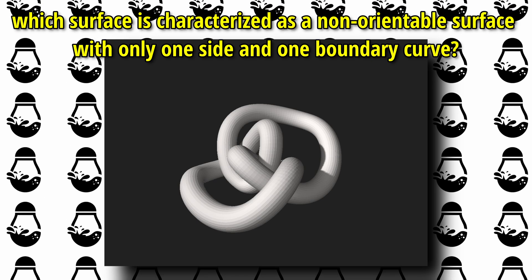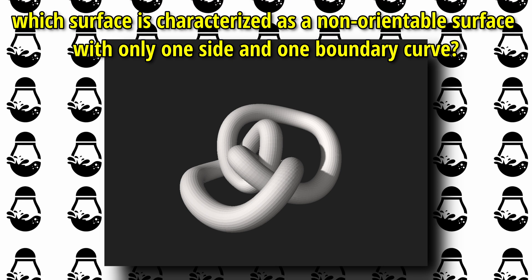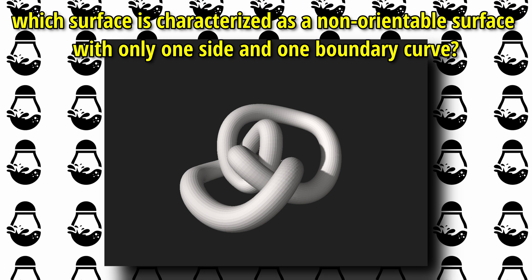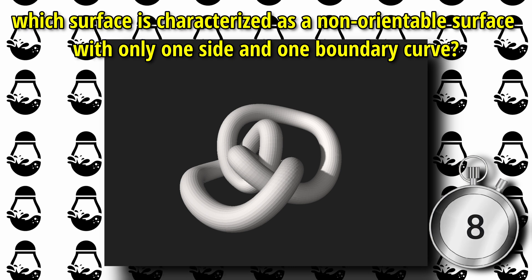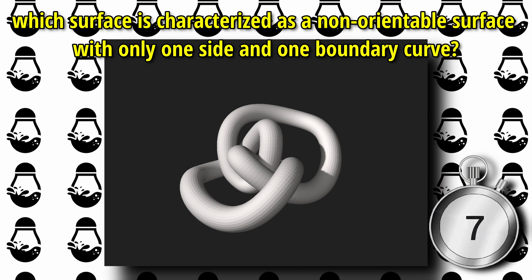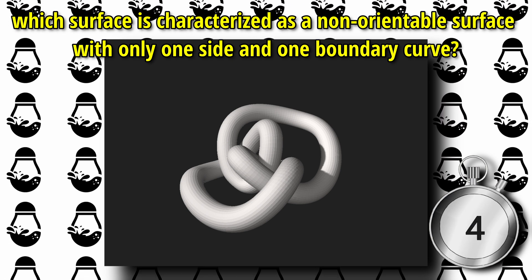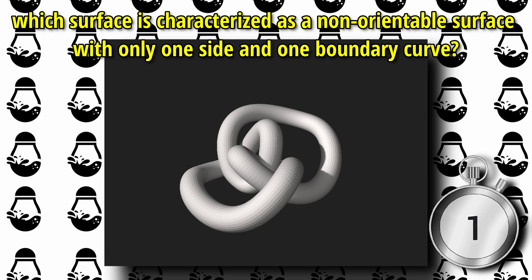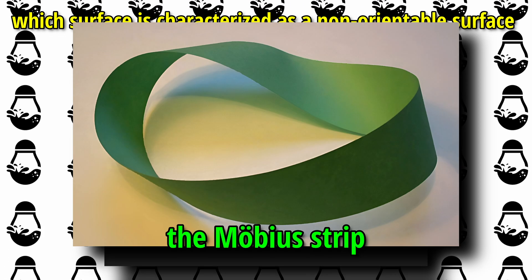Next question. In topology, which surface is characterized as a non-orientable surface with only one side and one boundary curve? The answer is the Möbius strip.